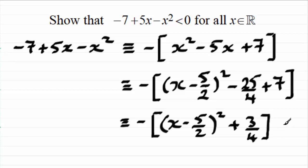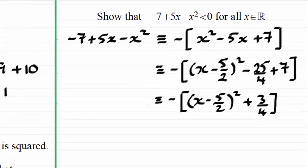Okay, so how does this show then that -7 + 5x - x² is always less than 0, always negative? Easy. If we look at these two terms inside the bracket, we can see that this term is always squared so it's going to be positive. We add another positive value, so inside the square brackets this is going to be positive, and so we've got a negative outside. So overall the expression is going to be negative for all real values of x.